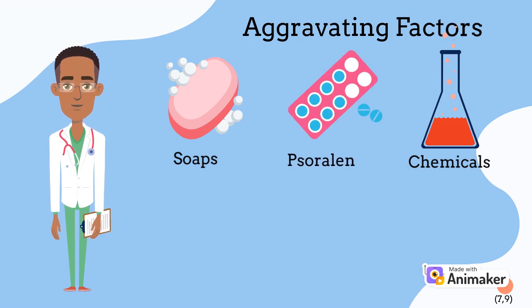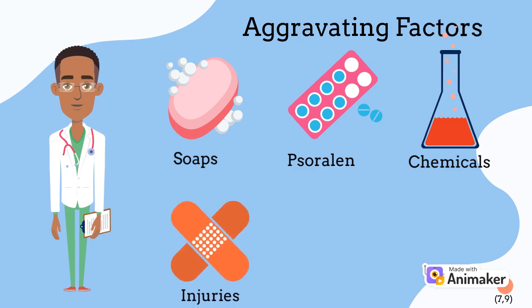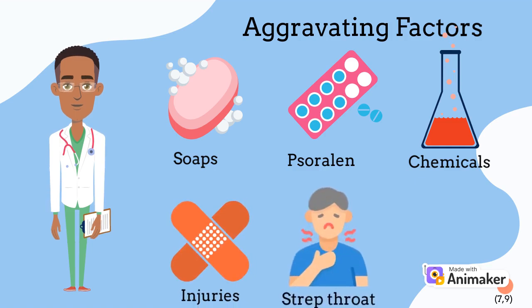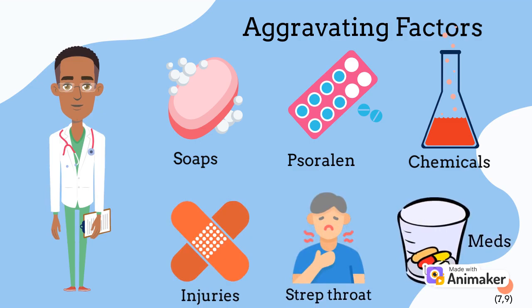Psoriasis triggers, on the other hand, include skin injuries like cuts, insect bites, sunburns, strep throat, and medications such as ibuprofen, which is an anti-inflammatory drug, and acitretin, which is a blood pressure medication.